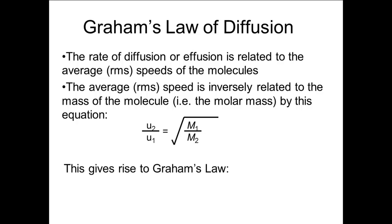Substituting the rate of diffusion or effusion for the rms speed gives us Graham's law, which says that the ratio of the rates of diffusion or effusion is inversely proportional to the square root of the ratio of the molar masses.